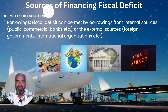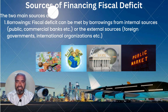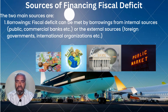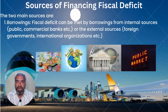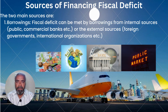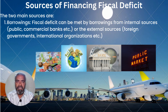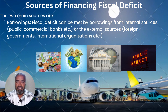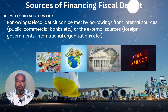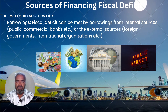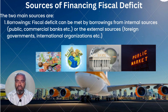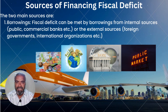Sources of Financing Fiscal Deficit. The two main sources are: 1. Borrowings. Fiscal deficit can be met by borrowings from internal sources, i.e., the public, commercial banks, etc., or from external sources, i.e., foreign governments, international organizations, etc.